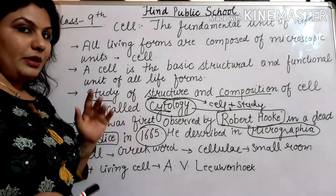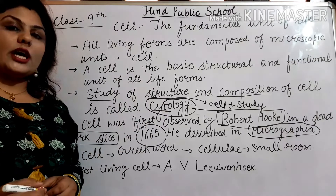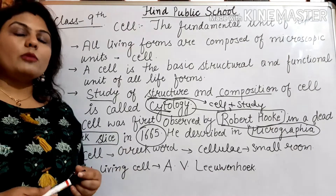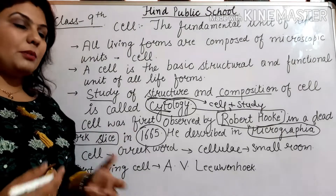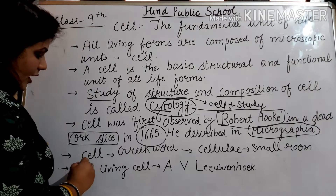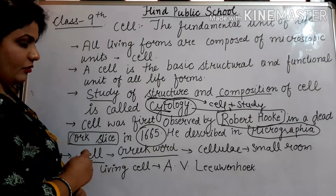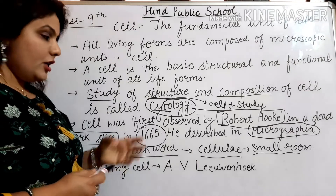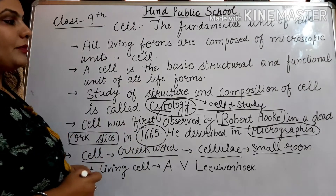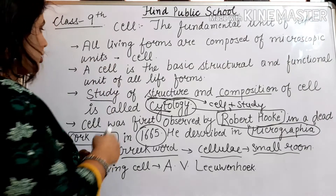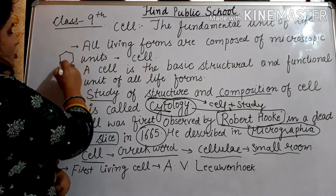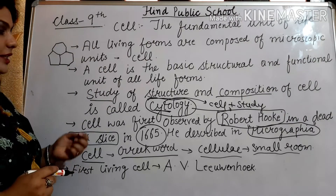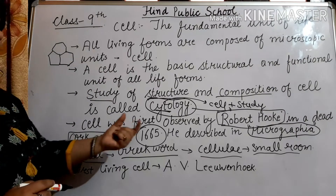Usne is cell ko dekha tha apne khud banaye hue ek microscope mein, jo ki bahut primitive microscope tha. Aaj kal hum log compound microscope ko istemal karte hain, us time uske paas primitive microscope tha. Cell word kahan se aaya? Cell jo word hai, voh aaya hai Greek language se. Greek mein word hota hai 'cellule' — cellule matlab small room, ek chhota sa compartment. Jab Robert Hooke ne cork ko study kiya, toh usse chhote chhote compartments dikhai diye, toh in chhote chhote compartments ka naam usne diya cell.